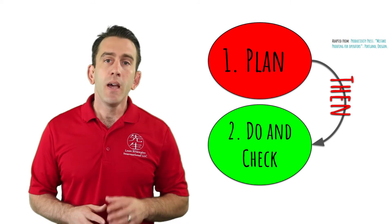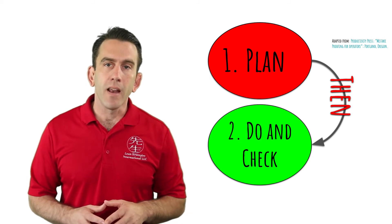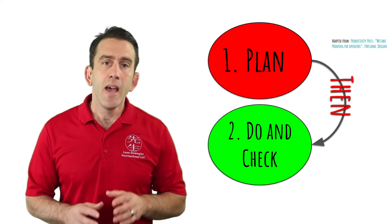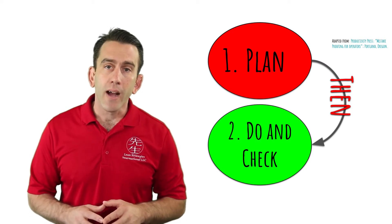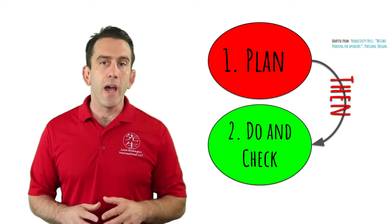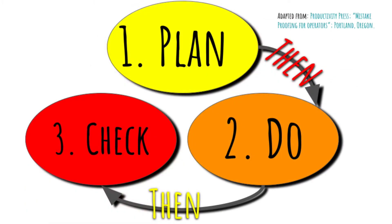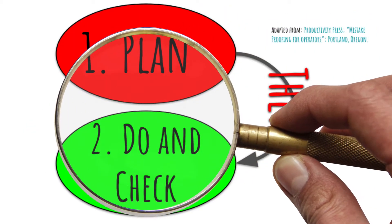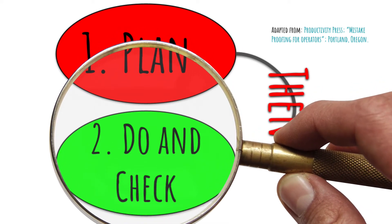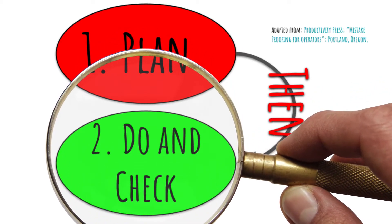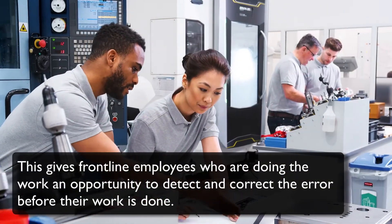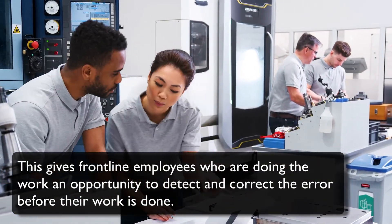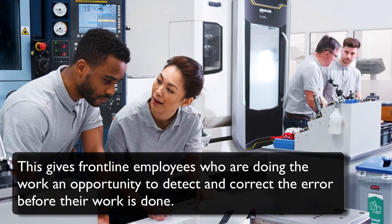In the ZQC system, this is done by creating an environment where the do and check occur at the same time. This helps ensure that the plan is executed the way it is intended, and if the plan is not correct, it is found right away. Essentially, the traditional method of quality changes from plan, do, then check — to plan, do, and check. This scenario performs inspection right at the point or place where an error or problem could occur.